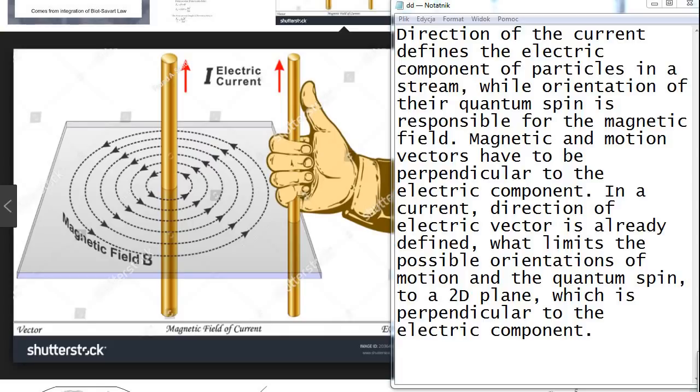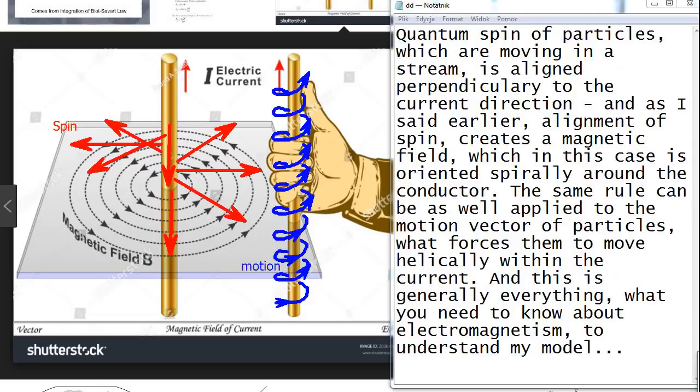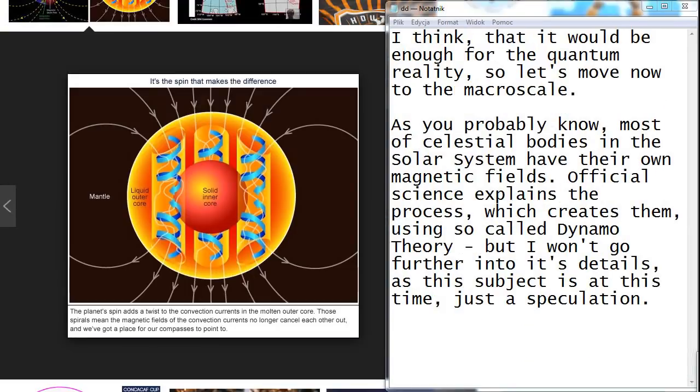In a current, direction of electric vector is already defined, what limits the possible orientations of motion and the quantum spin to a 2D plane, which is perpendicular to the electric component. Quantum spin of particles which are moving in a stream is aligned perpendicularly to the current direction. And as I said earlier, alignment of spin creates a magnetic field, which in this case is oriented spirally around the conductor. The same rule can be as well applied to the motion vector of particles, what forces them to move helically within the current. And this is generally everything what you need to know about electromagnetism to understand my model. I think that it would be enough for the quantum reality. So let's move now to the macro scale.